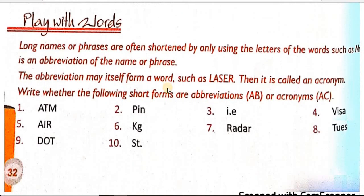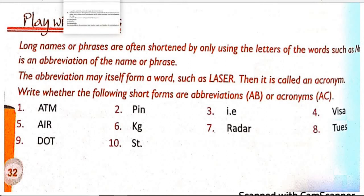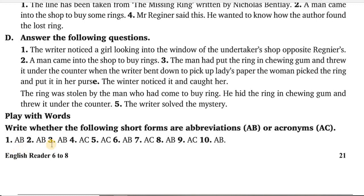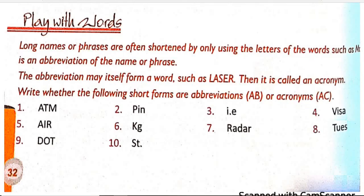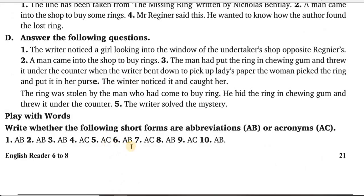So the next part is the play with words part. In which some long names and phrases are shortened. Kuch names aur kuch phrases jo hoti hain, jo hum bade naamon ke liye use karte hain. The abbreviation that itself becomes a word is called an acronym — for example, ATM. Whether the following short forms are abbreviations or acronyms: first is abbreviation, second is abbreviation, third is acronym, same acronym, sixth is abbreviation, seventh is acronym, eighth is abbreviation, ninth is acronym, and tenth is abbreviation.